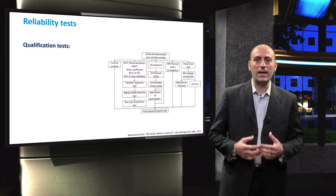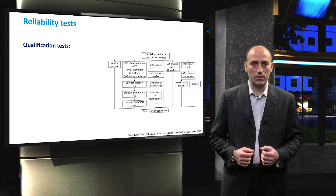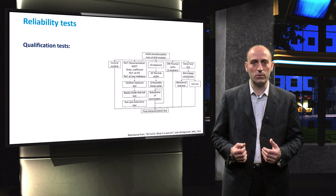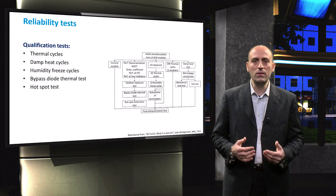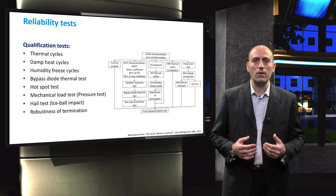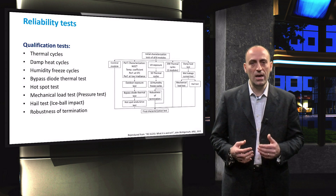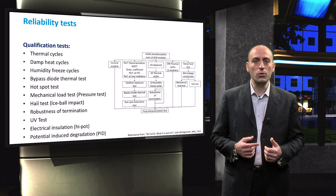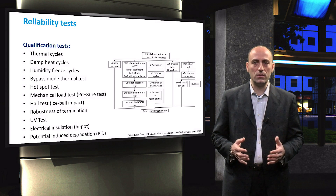Nor does it seek to discern the root cause of performance loss. Here we list a number of reliability tests, most of which are also prescribed by the IEC 61215 standard. The failure modes to be tested can be divided into climate, mechanical, radiation, and electrical failures. More specifically, there are multiple climate tests such as thermal, damp heat, and humidity-freeze cycle tests. Next, there are the mechanical tests such as mechanical load tests, the so-called pressure tests, and the hail tests, also called the ice ball impact test. Other tests are, for example, UV, electrical insulation, and the potential induced degradation tests.